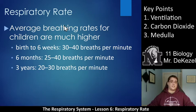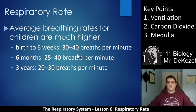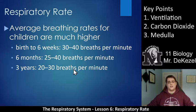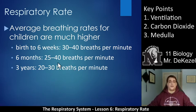Children breathe at a much higher rate. Babies from birth to six weeks breathe 30 to 40 breaths per minute, and it can be quite shocking for people to see their child breathing that fast. It slows down generally to 25 by six months, but can still be up to 40. At three years, it's between 20 and 30 breaths per minute, and it'll eventually get slower and slower until you're an adult at 12 to 18. Children's breathing rates are generally much higher than for adults at rest.